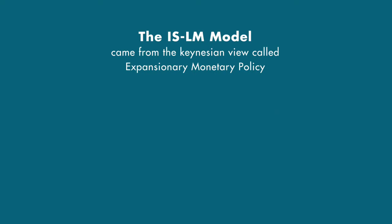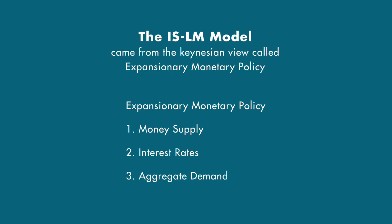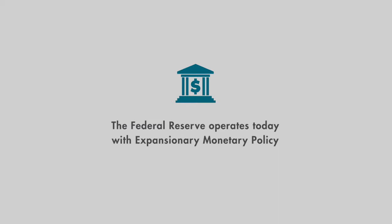The ISLM model states that the economy could be in equilibrium with less than full employment. It came from the Keynesian view called expansionary monetary policy. With the help of expansionary monetary policy, the money supply will increase, the interest rates will decrease, which will increase aggregate demand. The Federal Reserve operates today with expansionary monetary policy.